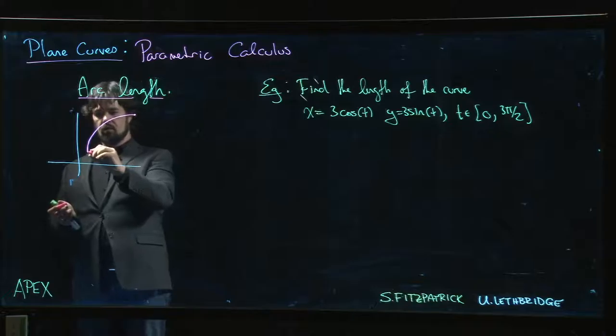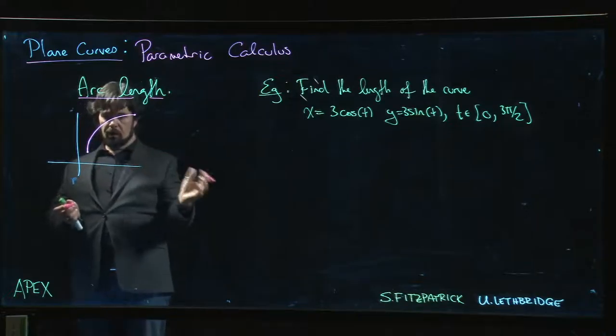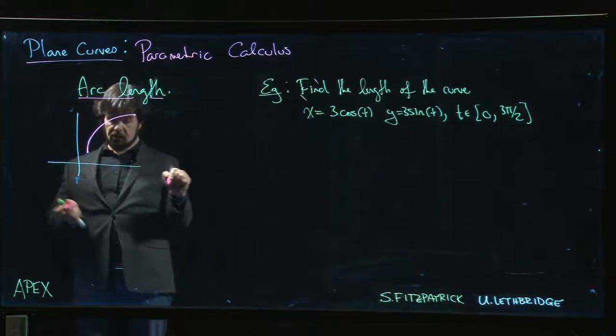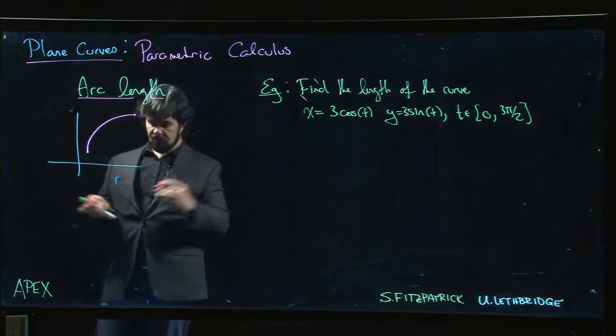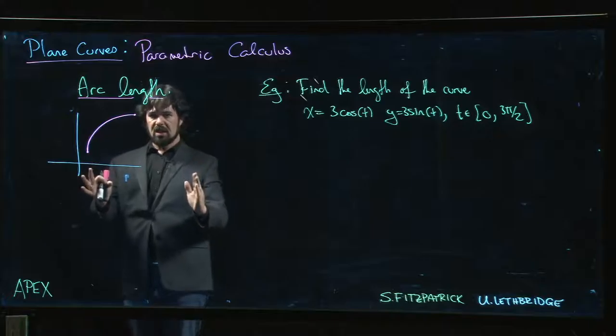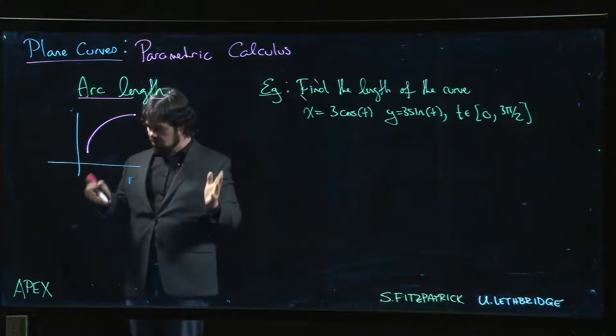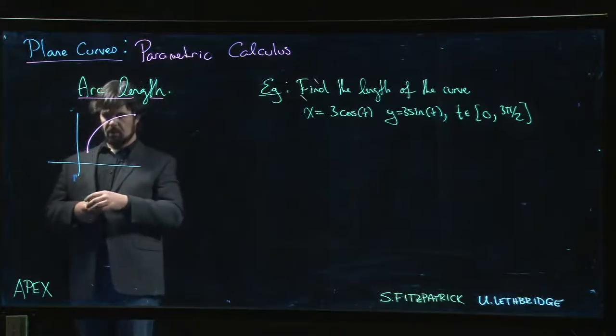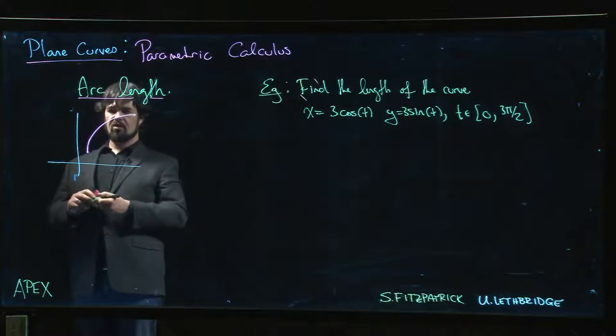And so we partition. If we're writing y as a function of x, we're going to partition along the x-axis. If we're writing x and y as functions of t, well we're going to partition the t interval. So we do the usual kind of argument involving partitions and Riemann sums - it's a similar story.